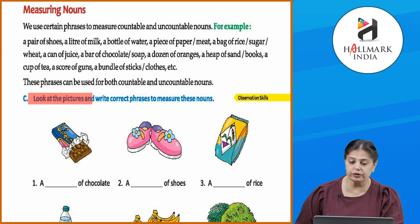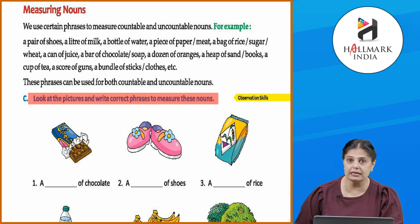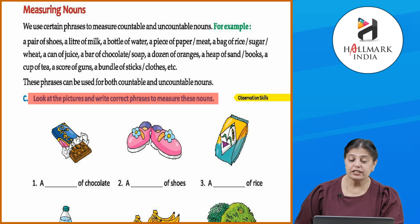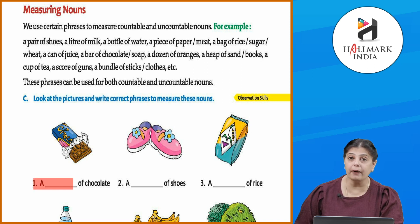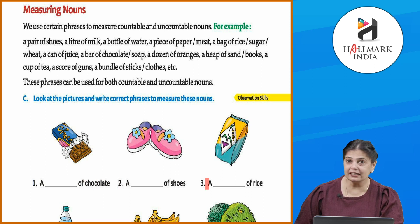Quickly look at the pictures and write the correct phrases to measure these. Is picture mein bana hai chocolate, so ye kya hota hai — a bar of chocolate. Then a pair of shoes. Us ke baad a bag of rice. Abhi ye baaki teen jo hain, wo aap ko apne aap karne hain. Okay children, now quickly start doing that.